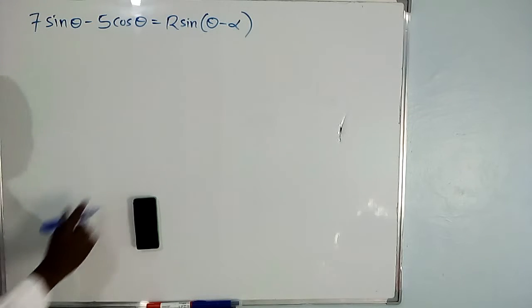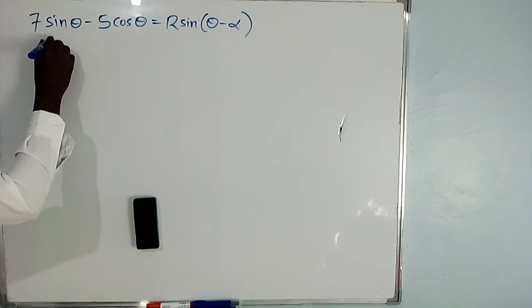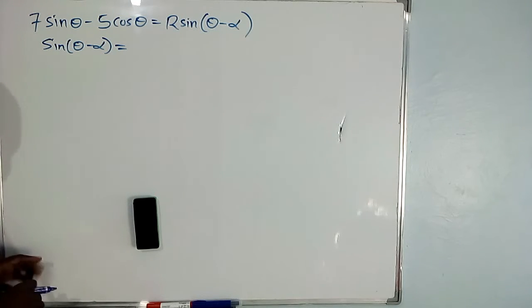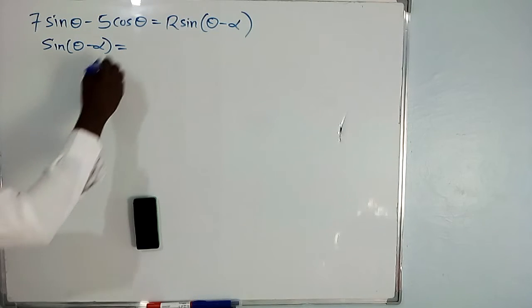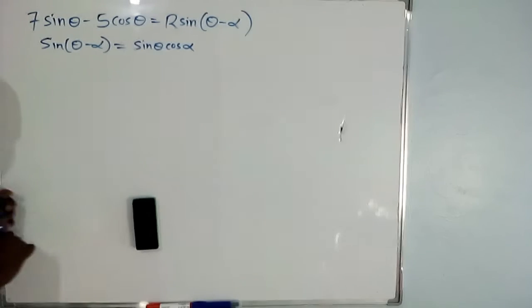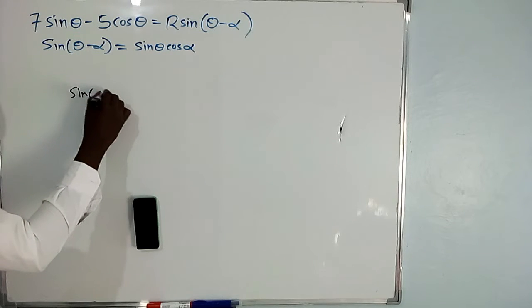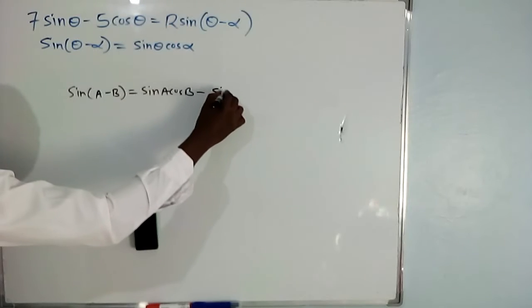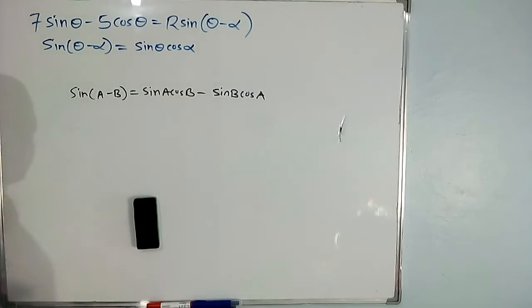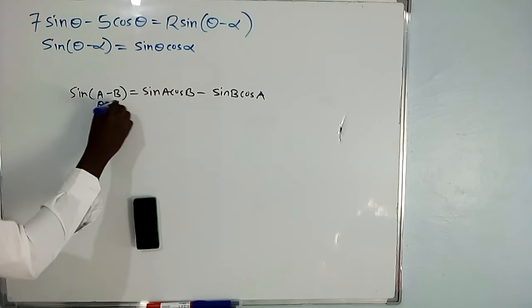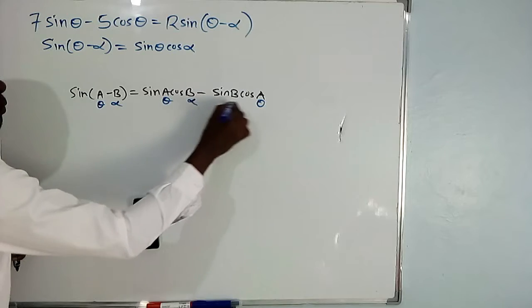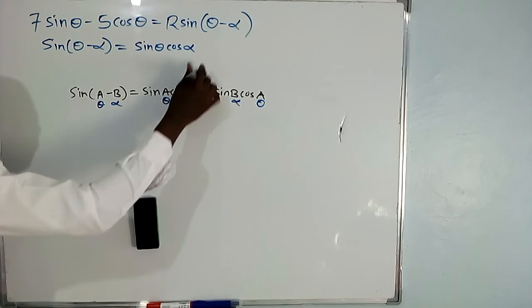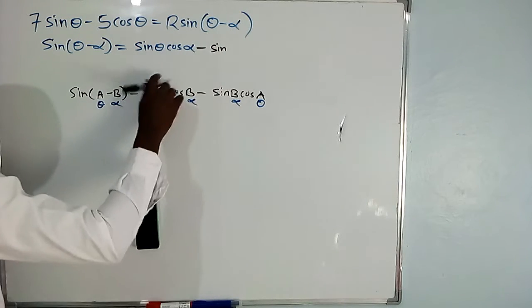The first step: start with sin(theta minus alpha). Using the compound angle formula, sin(A minus B) = sin A cos B minus sin B cos A. So sin(theta minus alpha) expands to sin theta cos alpha minus sin alpha cos theta.